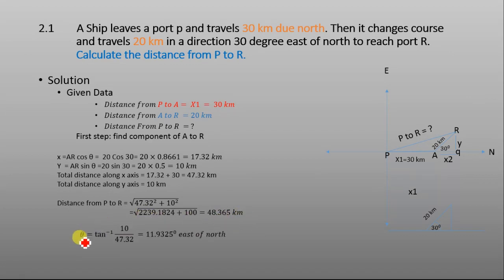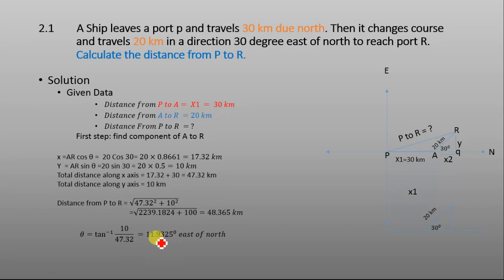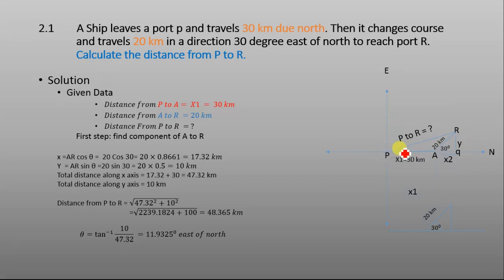To determine the direction, we use theta equals tangent inverse of y over x, where y is 10 kilometers and x is 47.32 kilometers. The final angle is 11.9325 degrees east of north.